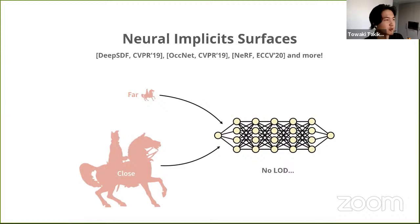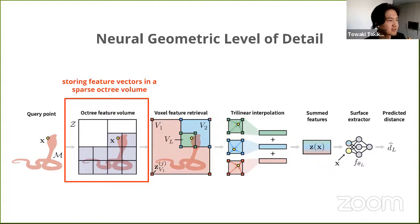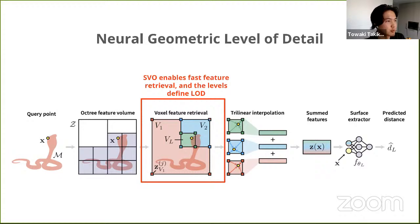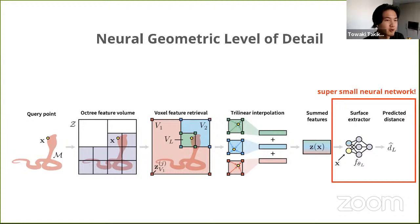These are exactly the problems we intend to solve in our neural geometric level of detail paper. Instead of a global feature vector, we use an octree — a sparse octree volume of feature vectors. This sparse octree lets you query features very fast with specialized algorithms, and the levels of the octree correspond to the levels of detail of your object. You can avoid boundary artifacts from a grid-based representation by interpolating on those feature vectors, and get continuous LOD by interpolating across the different levels.